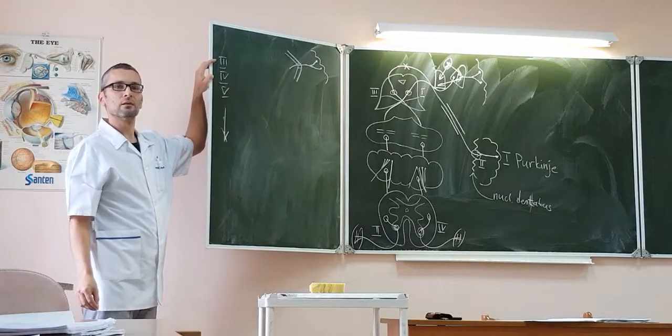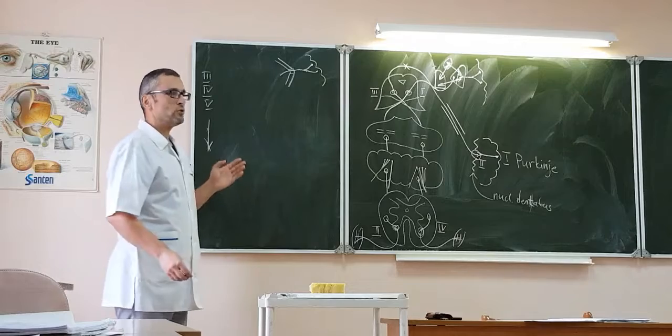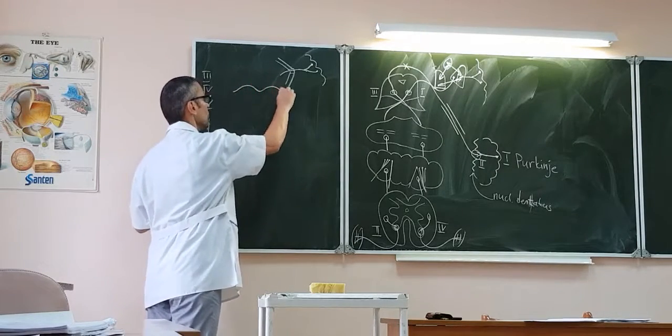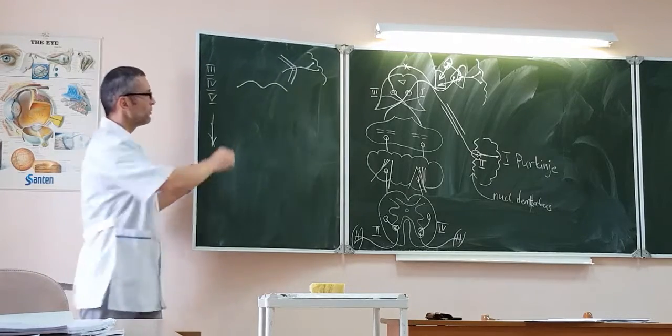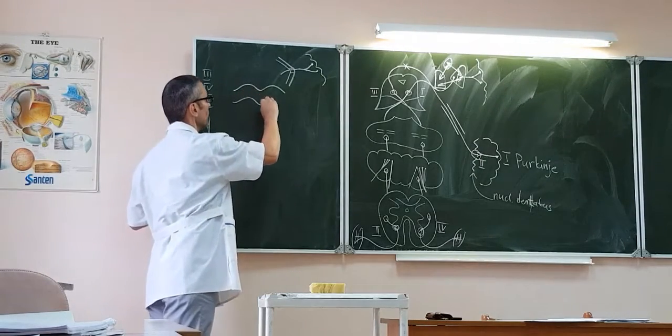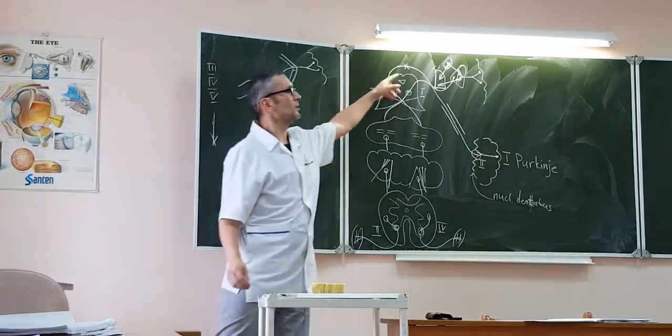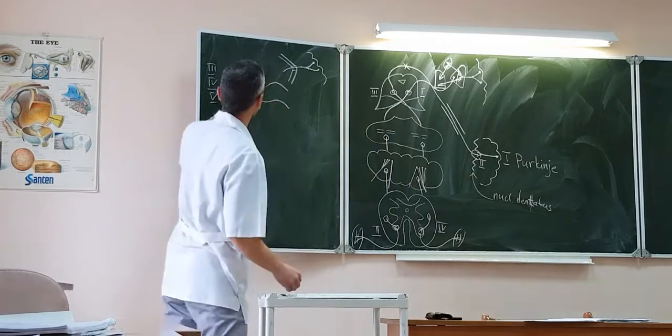They are localized in the midbrain. In your textbook it is drawn like that: one and two, which means two colliculi superior or below two colliculi inferior. You can draw this midbrain like here, like we usually draw, not like that.